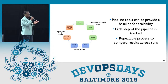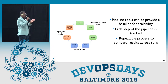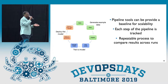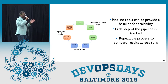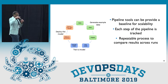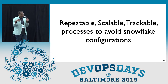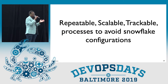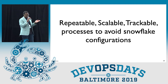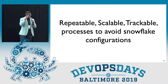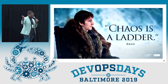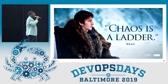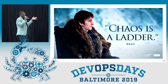These pipelines really help provide visibility in what's going on. It puts things in a codified manner — each step is tracked and you can see where it's going, and the repeatable process can keep doing this over and over again. A repeatable, scalable, and trackable process to avoid those snowflake configurations — that's what you achieve through these tools. Chaos is a ladder, so have a pipeline to go through that. Thank you.